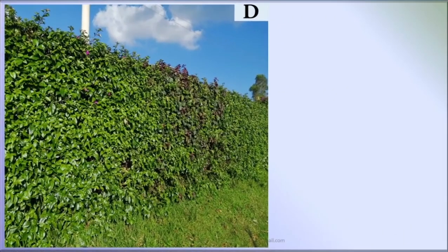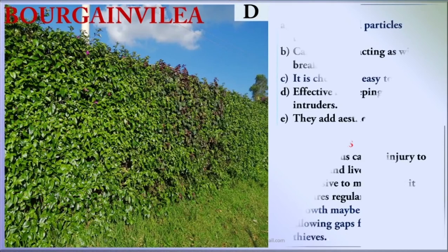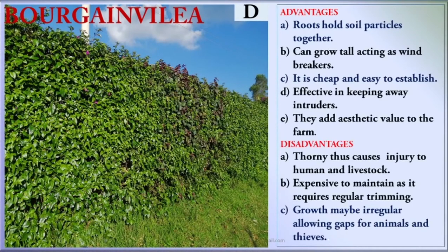Fence D is Bougainvillea, a very good fence. Its advantages: the roots hold soil particles together, preventing soil erosion; they can grow tall, acting as windbreakers; it is cheap and easy to establish; it is effective in keeping away intruders; and most importantly, it adds aesthetic value to the farm. Disadvantages: it is a thorny fence that causes injury to humans and livestock; it is expensive to maintain as it requires regular trimming; and the growth may be irregular, allowing gaps for animals and thieves.